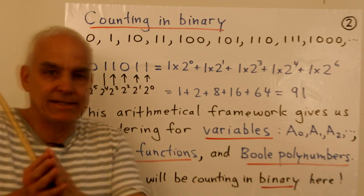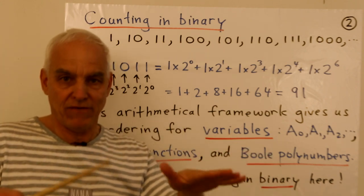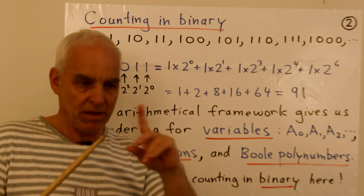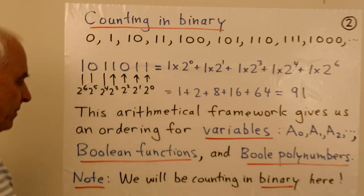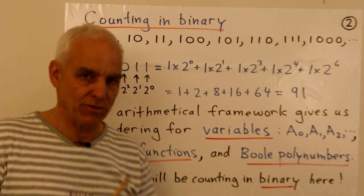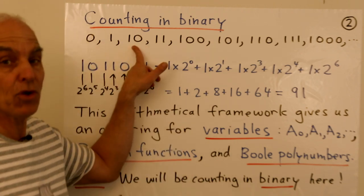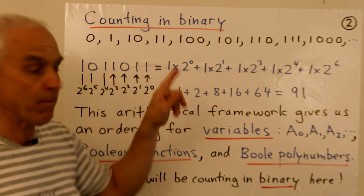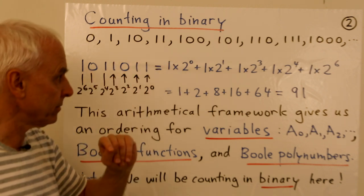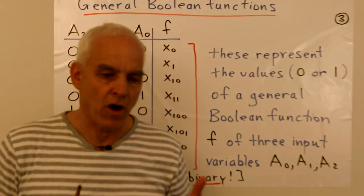But this binary ordering also allows us to organize the Boolean functions and the Boole polynumbers all at the same time. So we get a consistent labeling across the two spaces that we're kind of interested in. Note, we're going to be counting in binary here mostly from now on. So you have to make the adjustment. When you see this, this is no longer 10 here, this is the number two. This is not 110, this is the number six.